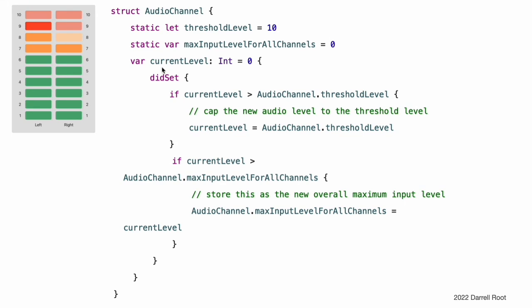The AudioChannel structure also defines a stored instance property called currentLevel, which represents the channel's current audio level on a scale of 0 to 10. The currentLevel property has a didSet property observer to check the value of currentLevel whenever it is set. This observer performs two checks: if the new value of currentLevel is greater than the allowed thresholdLevel, the observer caps currentLevel to the threshold level. If the new value of currentLevel after any capping is higher than any value previously received by any AudioChannel instance, the observer stores the new currentLevel value in the maxInputLevelForAllChannels type property.